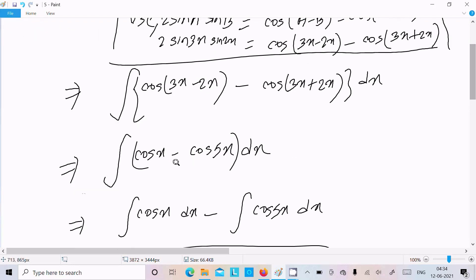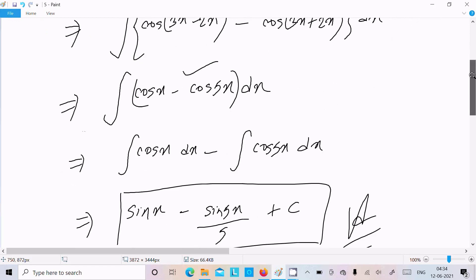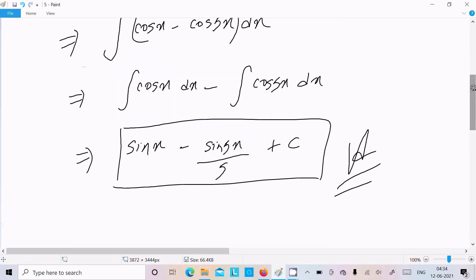After that you can separate that. After that, cos integration that is sin x, and cos 5x integration that is sin 5x divided by 5. About this one I already discussed how to get cos 5x integration equal to sin 5x divided by 5 in my previous videos.